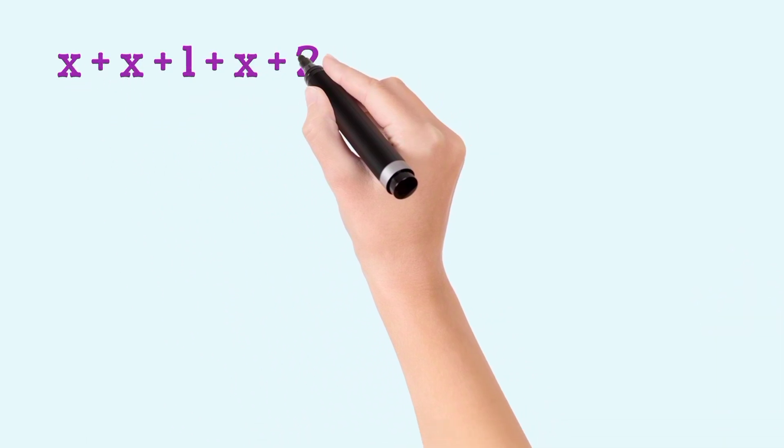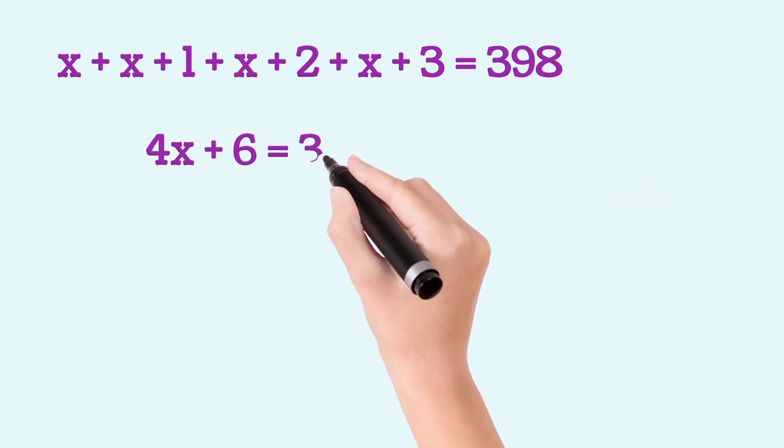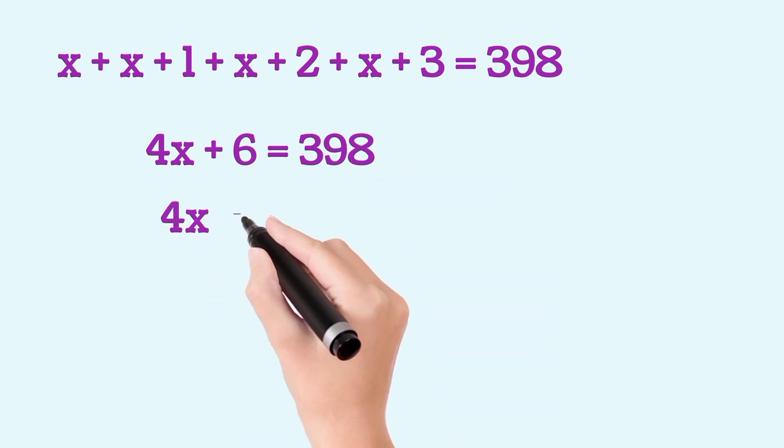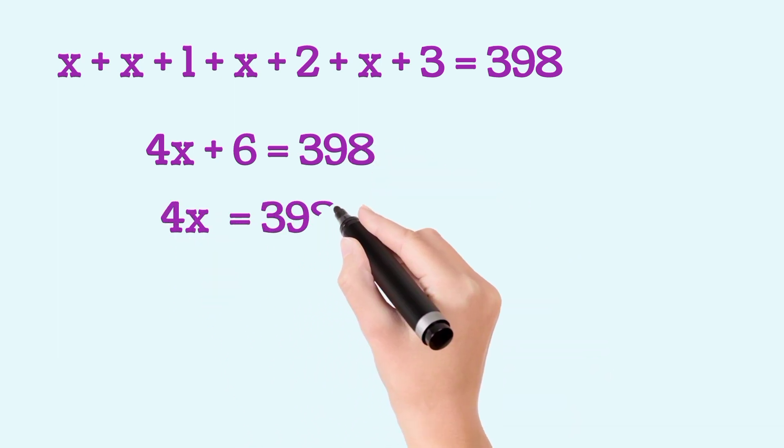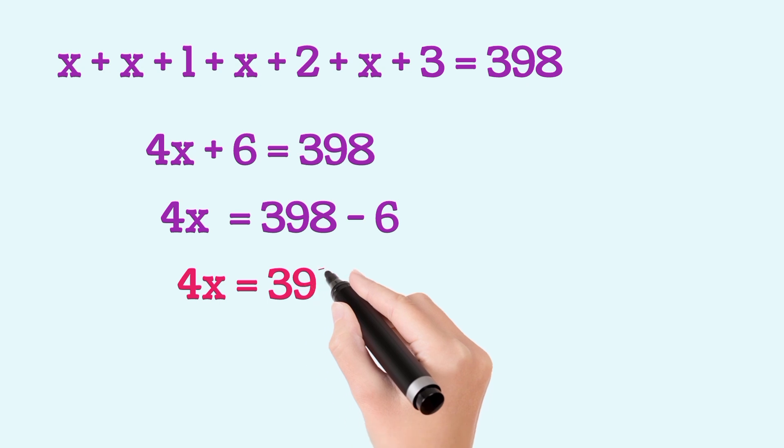So, x plus x plus 1 plus x plus 2, x plus 3 is equal to 398 which will give 4x plus 6 is equal to 398 or 4x is equal to 398 minus 6 or 4x is equal to 392.